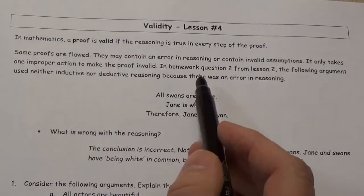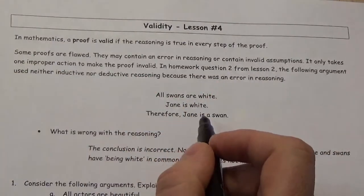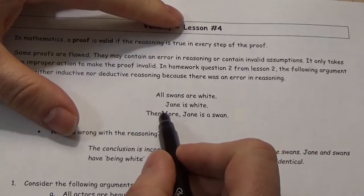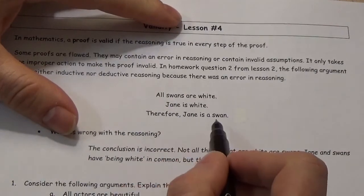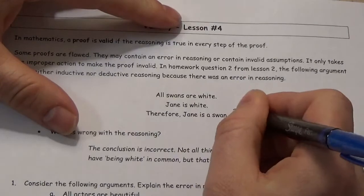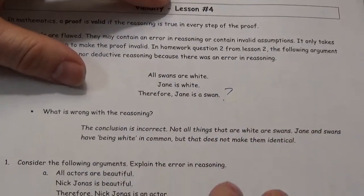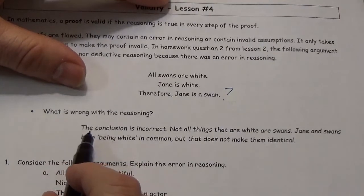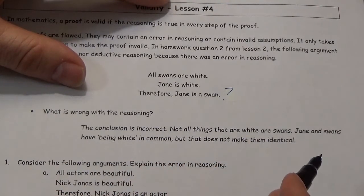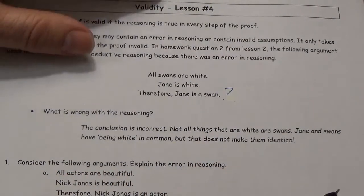In a Homer question from an earlier lesson, you saw the following argument: All swans are white. Jane is white. Therefore, Jane is a swan. There's a mistake in the reasoning here — the conclusion is incorrect. Not all things that are white are swans. Jane and swans have being white in common, but that does not make them identical.